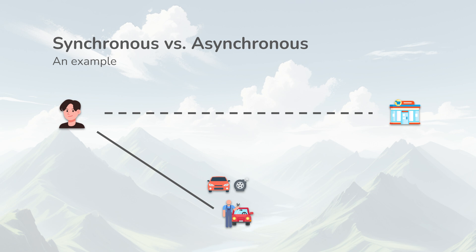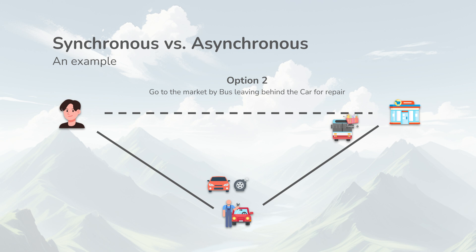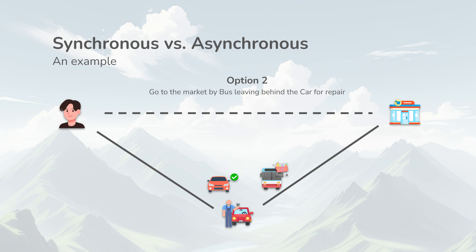Now Sam has two options here. Either he waits for 3 hours at the mechanic, gets the car fixed, and drives to the supermarket, or he can get a bus, go to the supermarket, do the shopping, and come back to the mechanic to pick up his car, hoping it will be fixed by then. The first option is an example of synchronous execution, where Sam is present at the mechanic waiting 3 hours, practically doing nothing. The second option is an example of asynchronous execution, where Sam gets other important things done while the mechanic fixes the car.